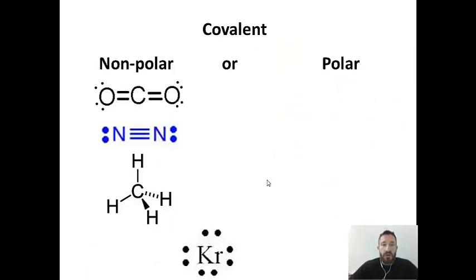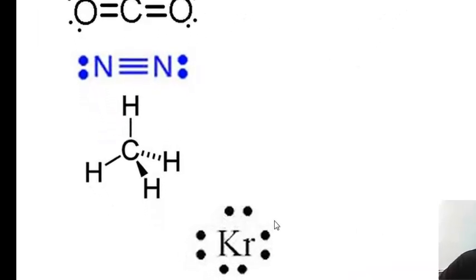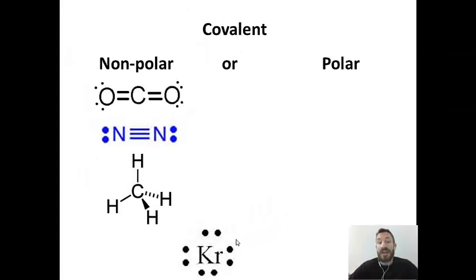First you want to classify things as ionic or covalent, and the next thing you'll do is classify things as polar or nonpolar. Hopefully you'll recall from our discussion of bonding that things like carbon dioxide, nitrogen, methane (CH₄), and also a single atom like a noble gas would all be considered nonpolar. There's not a negative end or a positive end — no partial negative or partial positive — on these particles.